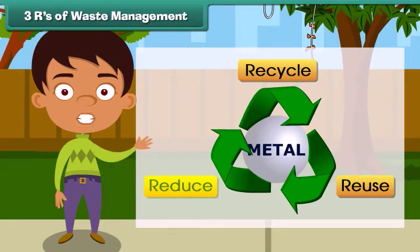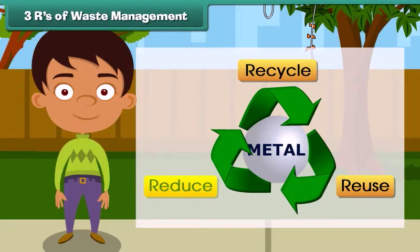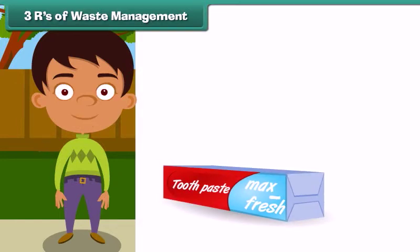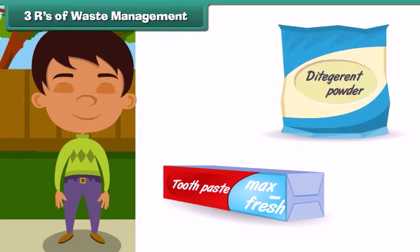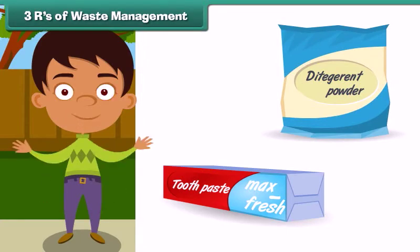The third R stands for Reduce. Reduce means to decrease the use of substances that harm the environment. For example, we must buy larger packs of toothpaste, dishwasher detergents, cereals, etc., and reduce the quantity of packaging material.